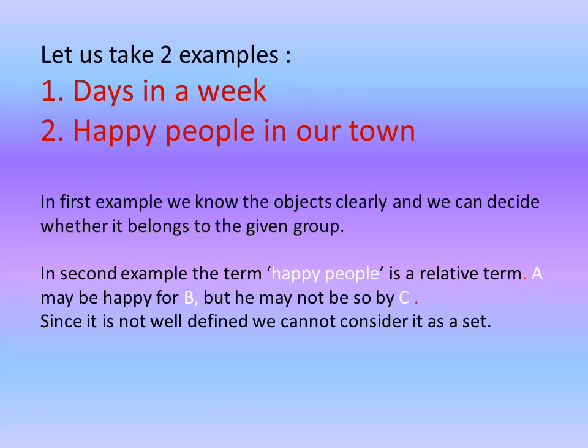Let us take two examples. First, days in a week. Second, happy people in our town. In the first example, we know the objects clearly and we can decide whether it belongs to the given group. In the second example, the term happy people is a relative term. A may be happy for B but he may not be so by C. Since it is not well defined, we cannot consider it as a set.